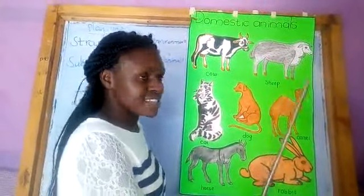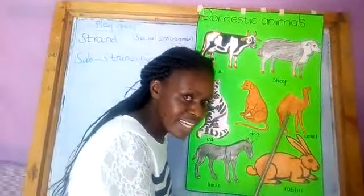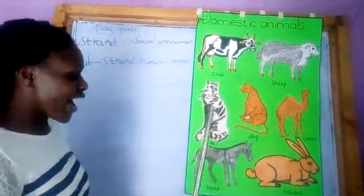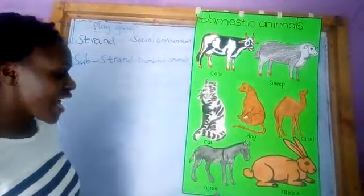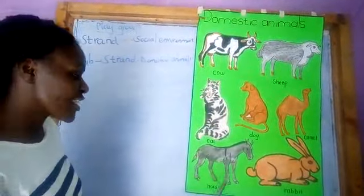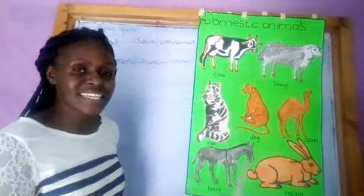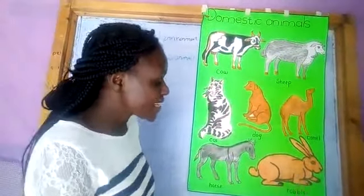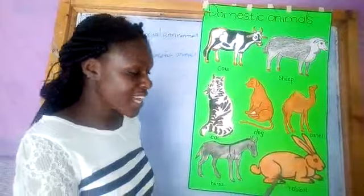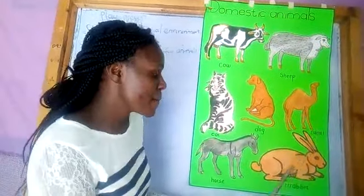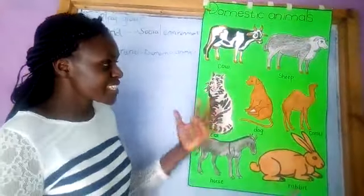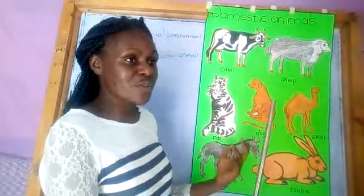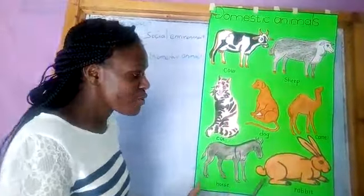A camel gives us meat and milk. A horse gives us meat. A rabbit also gives us meat. So these are some of the domestic animals that we have at home.